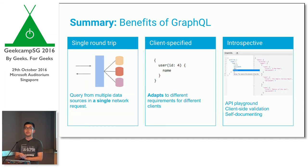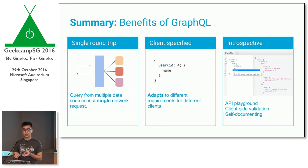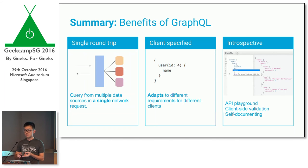How does GraphQL solve the drawbacks of REST? First, it's a single round trip — you don't have to make multiple REST calls to get the full graph of relationships. Second, it's client-specified — you don't need custom endpoints because clients tell you exactly what they need. And third, it's introspective — by annotating your business domain you get documentation, the Graphiql playground, and client-side validation for free.